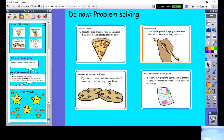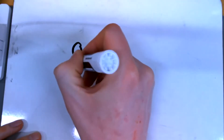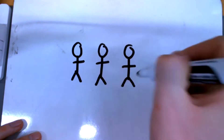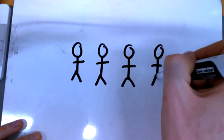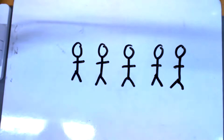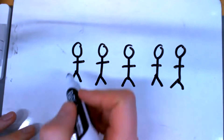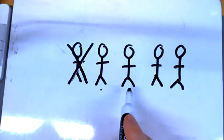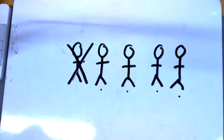We have one more: if you invite five people to a party and one of them says they cannot come, how many people will be at the party? We invited five people — one, two, three, four, five — but one said they cannot come. How many people came to the party? One, two, three, four. Well done, boys and girls, if you said four! Give yourself a pat on the back.